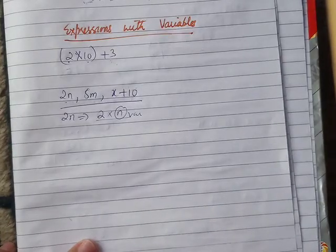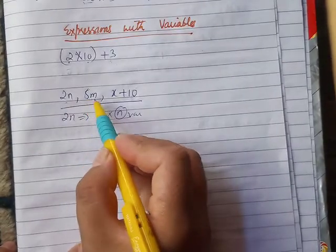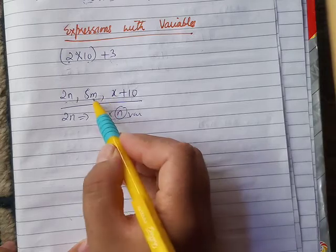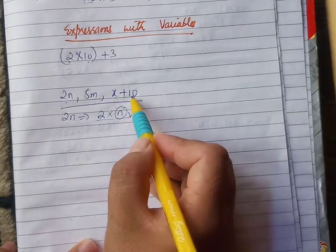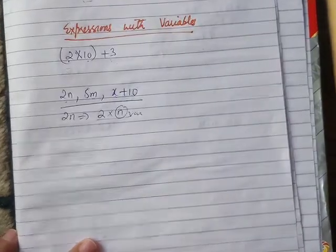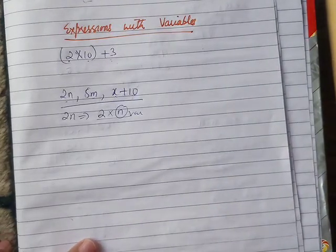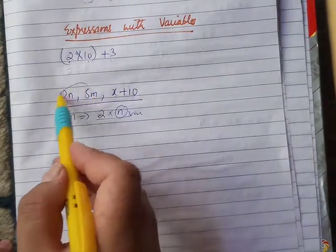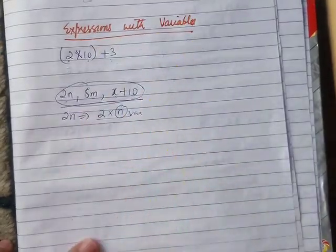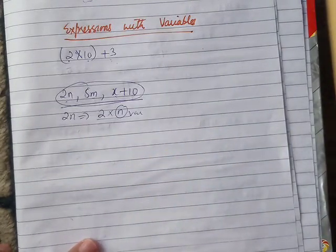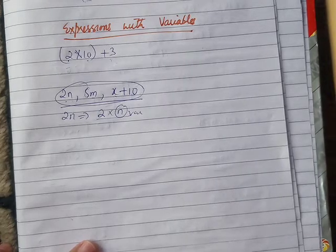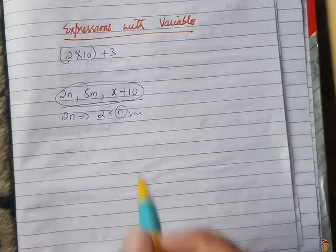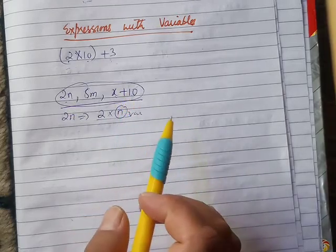The expression has variables. x is a variable. Expression with variables - the expression has variables, so this is an expression with variables.